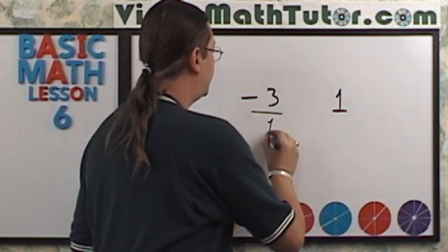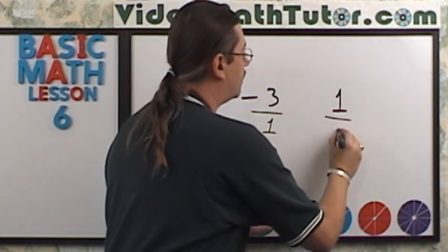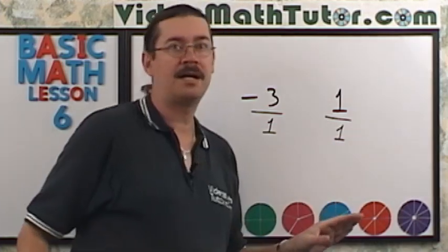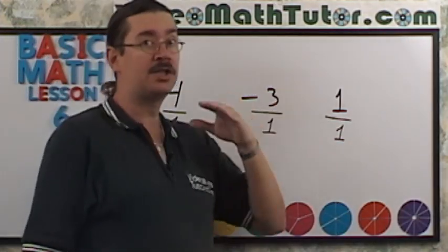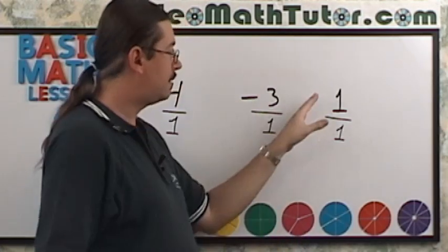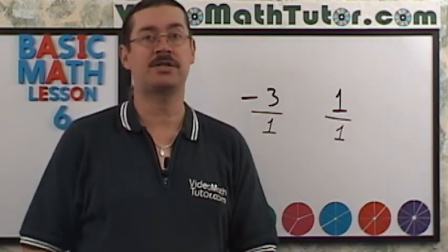Negative 3 can be done likewise. And see, according to our definition, the numerator doesn't have to be just larger. It can actually be equal. So this technically is an improper fraction, 1 over 1.